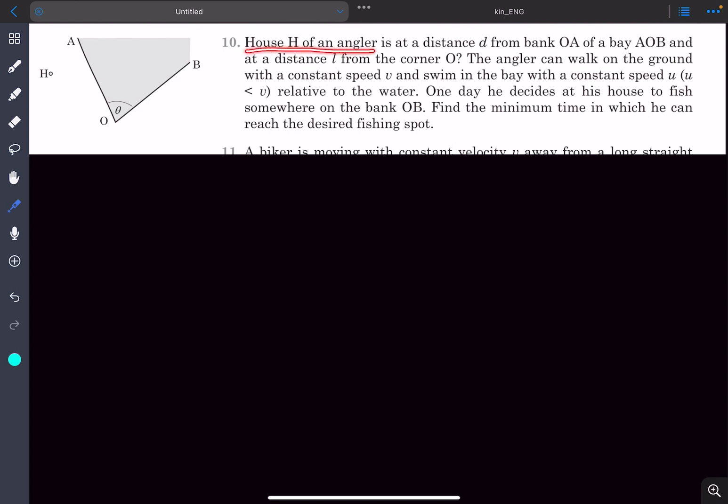House H of an angler is at a distance D from the bank OA and at a distance L from the corner O. The angler can walk on the ground with a constant speed V and can swim in the bay with a constant speed U relative to water. One day he decides at his house to fish somewhere on the bank OB. Find the minimum time in which he can reach the desired fishing spot.